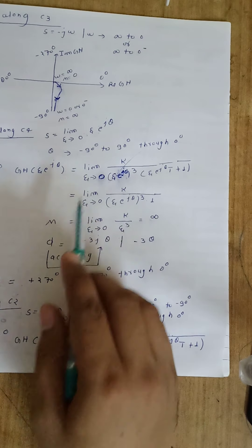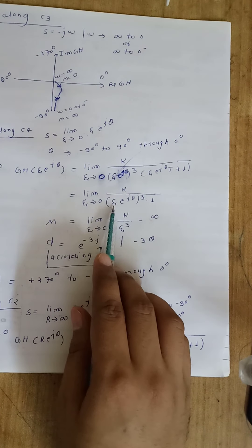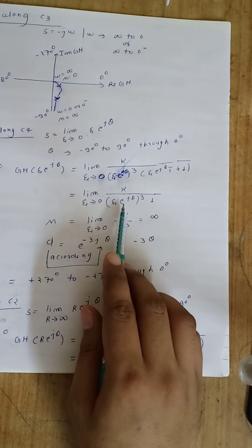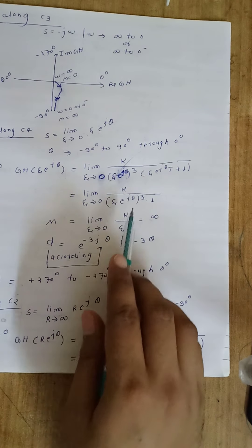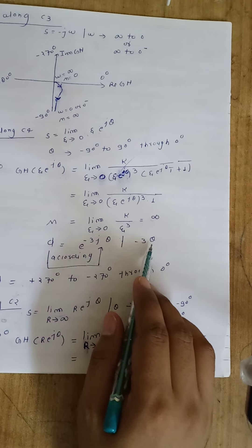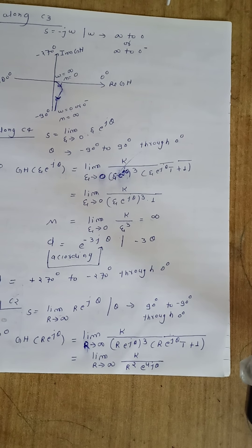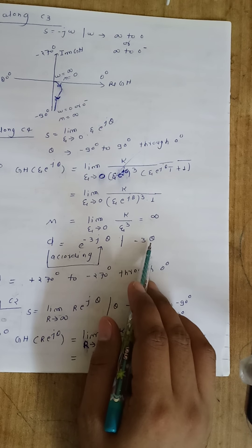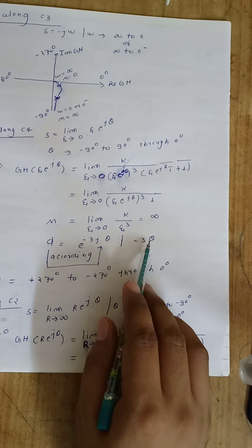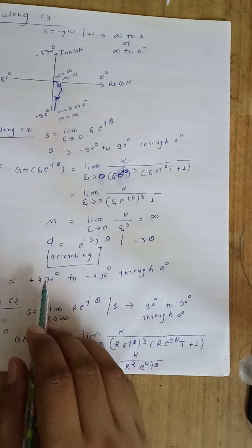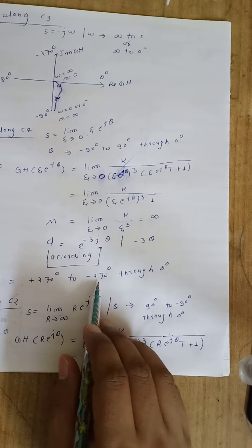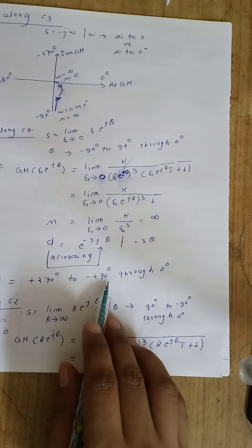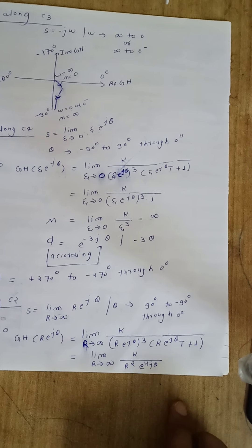From this we can write the phase angle as minus 3 theta. Because in polar form R e to the j-theta, theta defines the phase angle — so here we have phase angle equal to minus 3 theta. We know theta will vary from minus 90 to plus 90 through zero degrees. For theta equal to plus 90 degrees, we have angle equal to minus 270 degrees. For theta equal to minus 90 degrees, we have angle equal to plus 270 degrees. For theta equal to zero degrees, we have phase angle zero degrees. So the phase angle will vary from plus 270 to minus 270 through zero degrees.